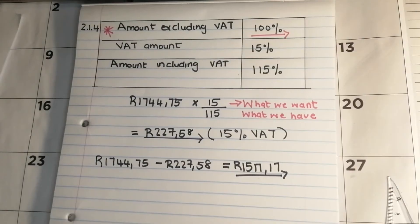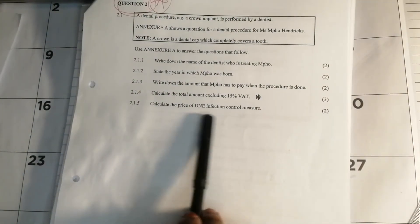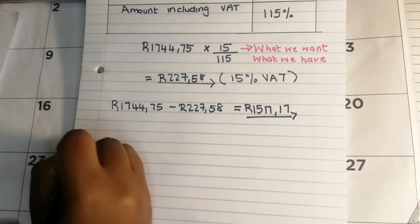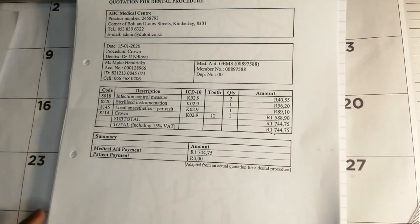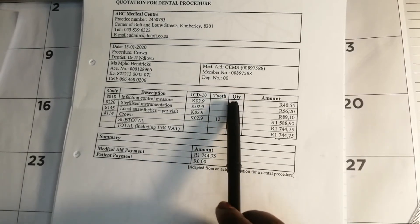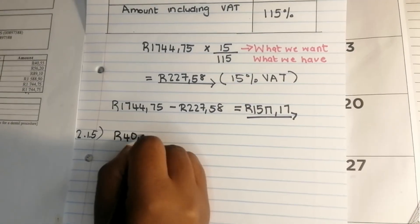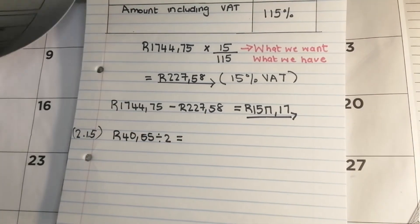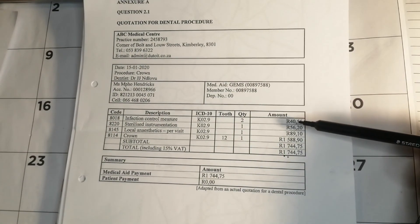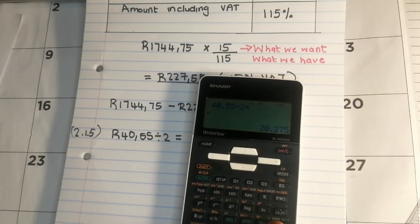Question 2.1.5: Calculate the price of one infection control measure. Looking at the quotation, the quantity for infection control measure is 2, and the price for 2 is R40.55. To find the price for one, divide by 2: R40.55 ÷ 2 = R20.28. That is the price of one infection control measure.